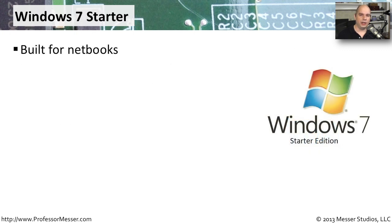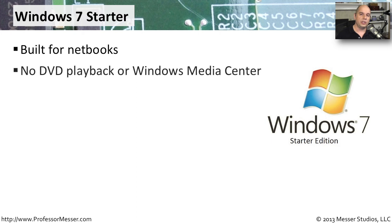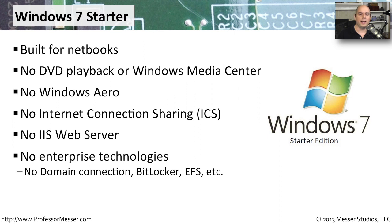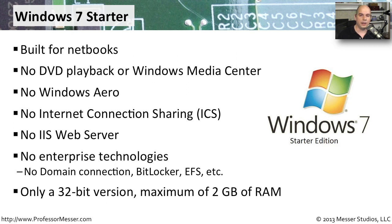Windows 7 Starter is a basic version of the operating system designed for netbooks — very small portable computers without advanced graphics capabilities or high-end processors. So it generally doesn't include DVD playback, Windows Aero, internet connection sharing, or web server functionality. There were also no enterprise technologies like Active Directory, BitLocker, or EFS encryption. Windows 7 Starter was only available in a 32-bit version and supported a maximum of two gigabytes of memory.